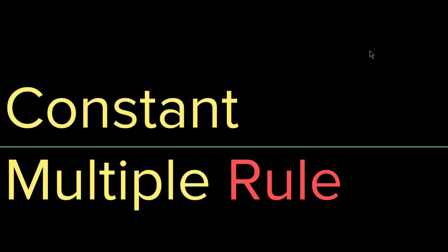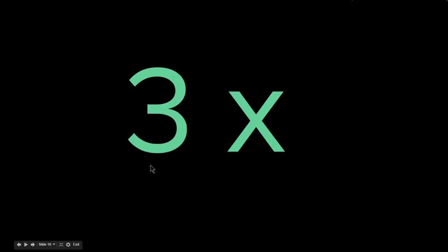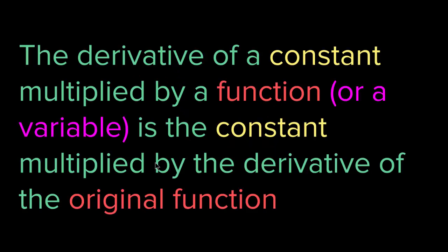The second rule we have is the constant multiple rule. Basically, if you have a variable like x and you have a constant, how do you find the derivative of this function? The derivative of a constant multiplied by a function or a variable is the constant multiplied by the derivative of the original function.